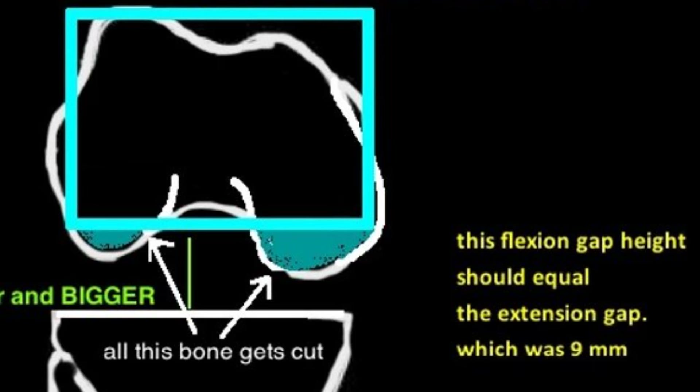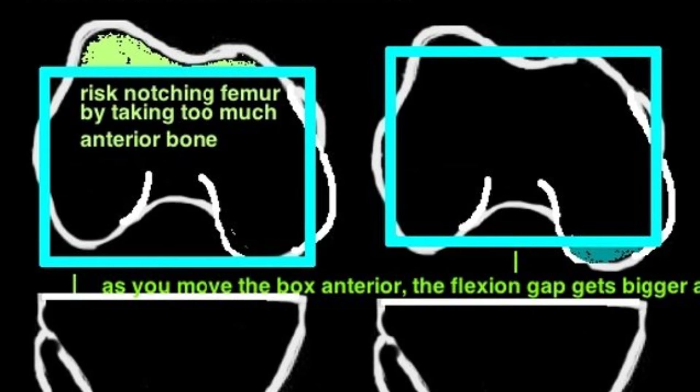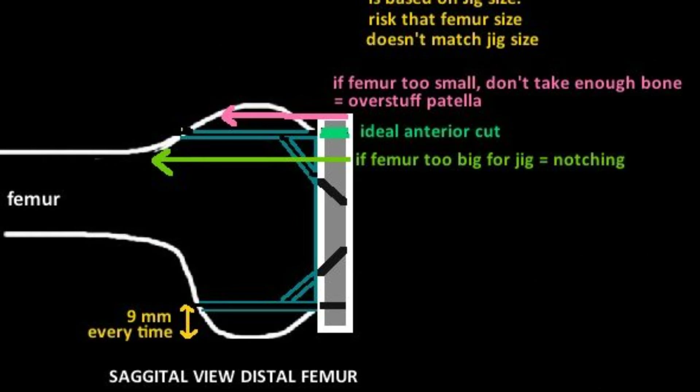Once rotation is obtained, the next step is to determine the depth of the flexion gap. The flexion gap needs to be both rectangular — indicating correct rotation — and the same size as the extension gap. The extension gap was 9 mm, so that is the target for the flexion gap too. We are therefore trying to take about 9 mm off the posterior femoral condyles. The simple way is posterior referencing: the jig is rigid at 9 mm from the posterior femoral condyles, so you cut 9 mm regardless of jig size. A smaller jig takes more bone off the anterior cortex; a bigger jig takes less — but always 9 mm off the posterior cortex.